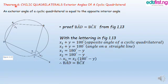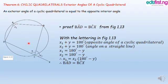Theorem 6, under cyclic quadrilateral: exterior angles of a cyclic quadrilateral. An exterior angle of a cyclic quadrilateral is equal to the opposite interior angle. This is the diagram that we are going to be proving. Prove that angle BAD equals angle BCX. The opposite angle of a cyclic quadrilateral is equal to 180 degrees.